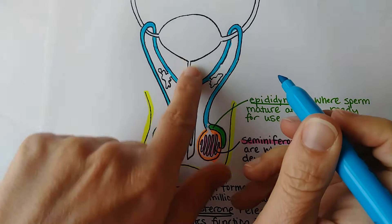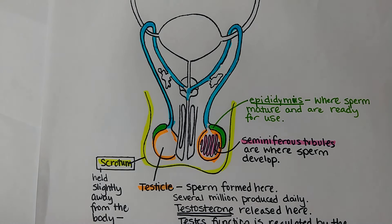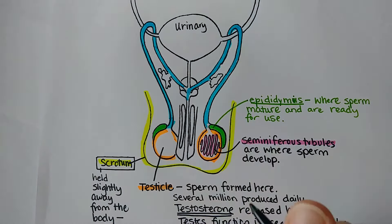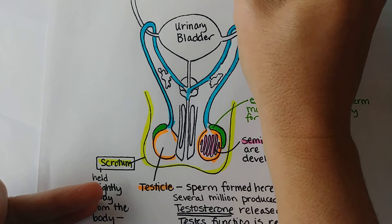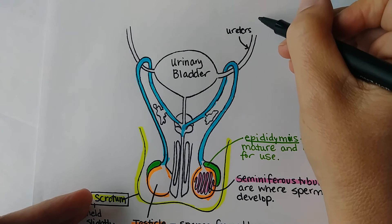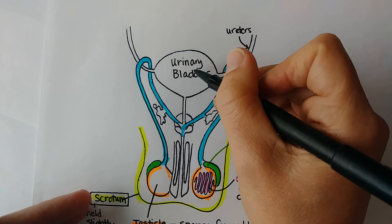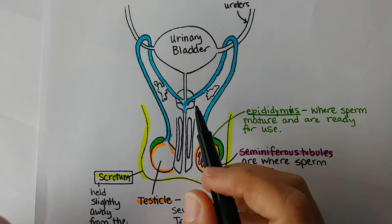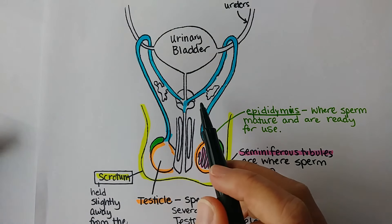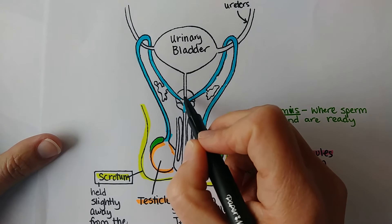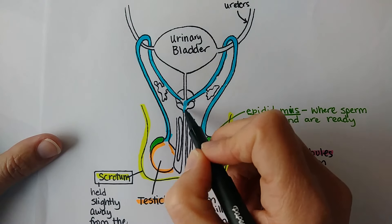The vas deferens ends where it joins the urethra. The urinary bladder stores urine coming down the ureters from the kidneys. Urine can leave the body through the urethra — the same opening used for semen. During or before orgasm, the prostate squeezes off the opening from the bladder so that only semen goes out and not urine.